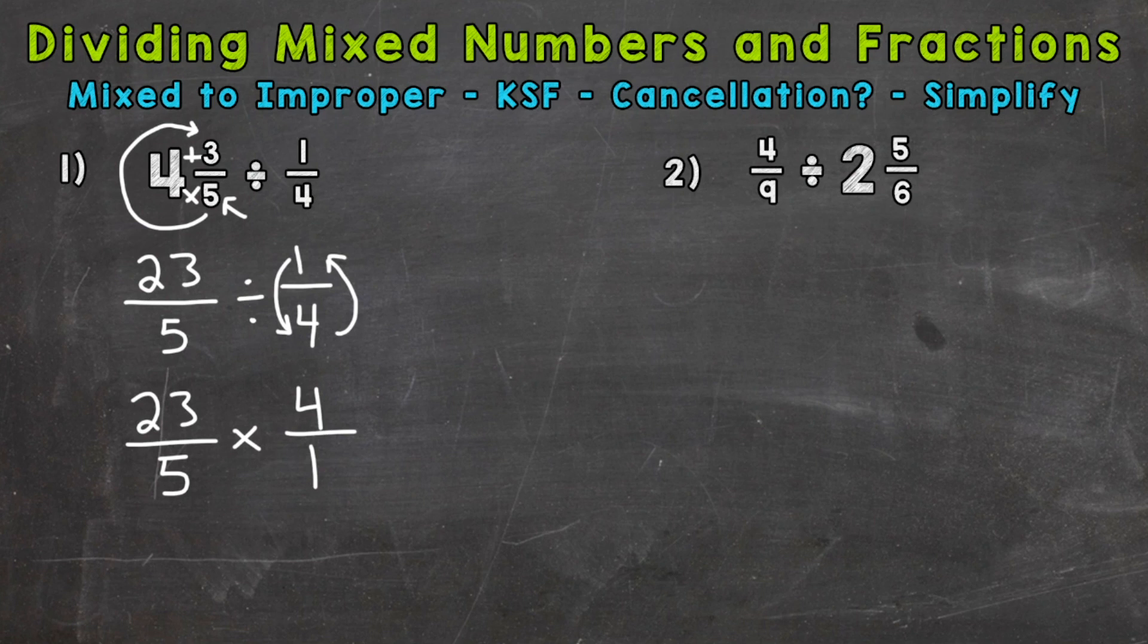Our next step, we multiply straight across. We can look to see if there are any cancellation opportunities. You can think of cancellation as simplifying the problem before multiplying. In the case of number one, we need to look at our numerators, 23 and 4, and our denominators, 5 and 1, and see if there are any common factors between them.